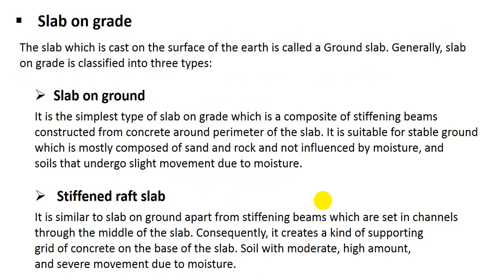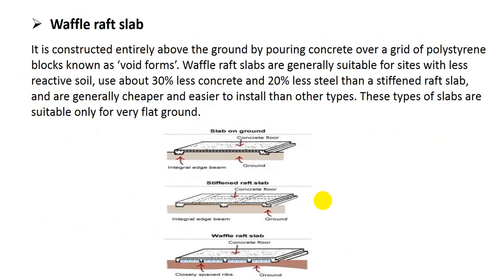Slab on grade includes some types: slab on ground, stiffened raft slab, and waffle-raft slab.